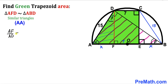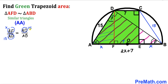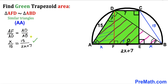From the similarity we get the proportion: AF divided by AD equals AD divided by AB. The whole diameter AB equals x plus 7 plus x, which gives us 2x plus 7. So AF is x, AD is 15, and AB is 2x plus 7. Cross-multiplying gives us x times (2x plus 7) equals 15 times 15, so 2x² plus 7x equals 225.